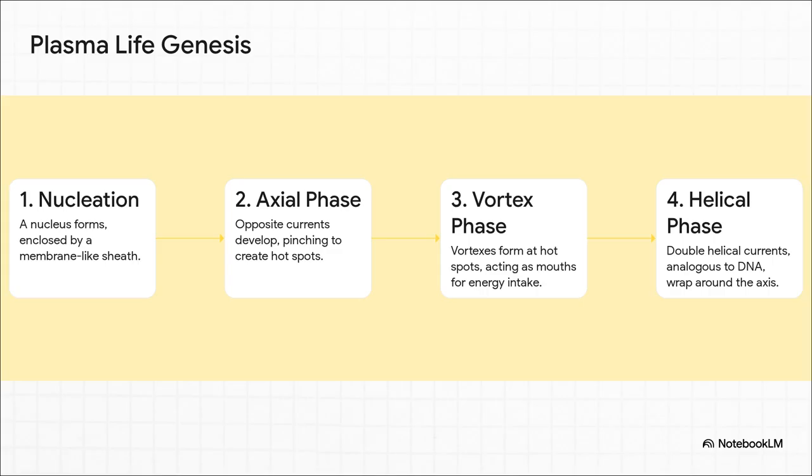It starts with a nucleus, wrapped in a membrane-like sheath. Then, an axis with opposite currents develops, and these currents pinch to create hot spots. At these hot spots, little vortexes form, which basically act like mouths, pulling in energy. And then, to top it all off, you get these double helical currents, think of it as plasma DNA, that wrap around the whole central axis. It's a complete, structured organism built entirely from the principles of plasma physics.